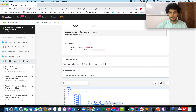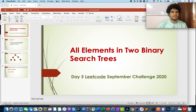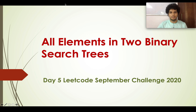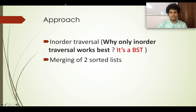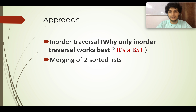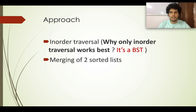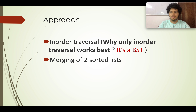The traversal that is very specific in this case is an inorder traversal. Why? Because you are given a binary search tree. Whenever you do an inorder traversal of a BST, it gives you the elements in a sorted fashion. It is an inherent property of a BST that inorder traversal yields elements in sorted order.